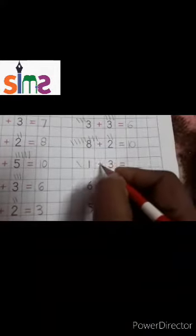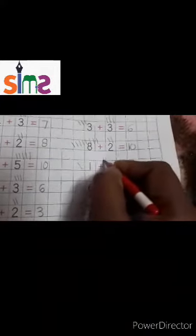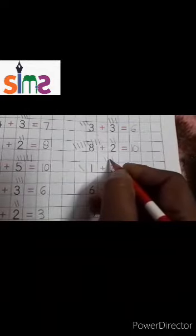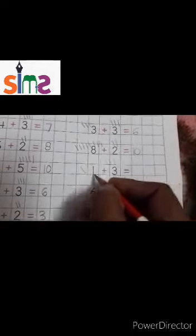One — one plus one, two, three. One, one, two, three, four. One plus three is equal to four.